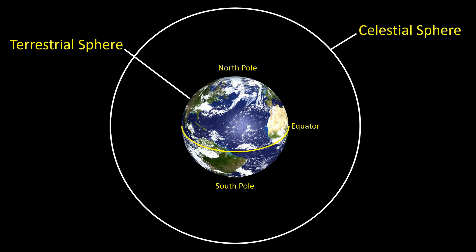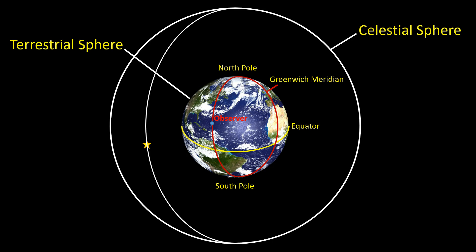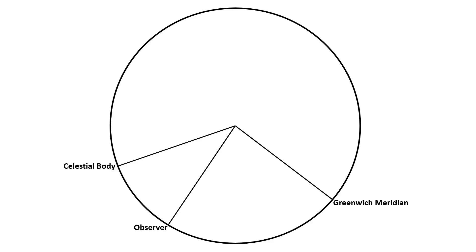Remember, the surface of our planet is the terrestrial sphere, while we imagine all celestial bodies to be in the celestial sphere. The Greenwich meridian is a longitude line set in England, and there is also a longitude coordinate for the observer. Each celestial body has a longitude line in the celestial sphere that corresponds to a longitude line on the terrestrial sphere. Greenwich hour angle is the angle between the meridian of the celestial body and the Greenwich meridian. With the rotation of the Earth, the meridian of every celestial body moves 15 degrees for each hour, hence the term hour angle.